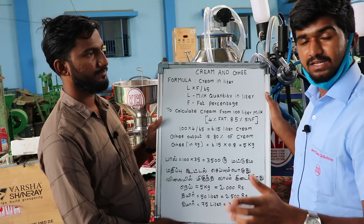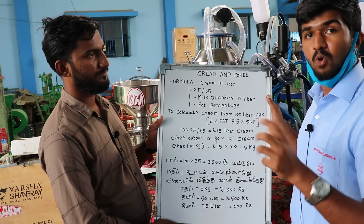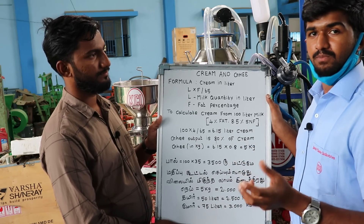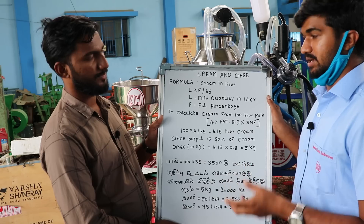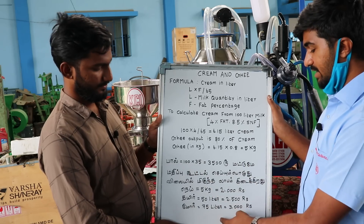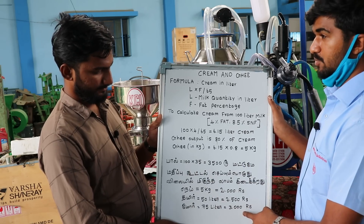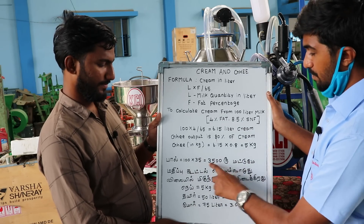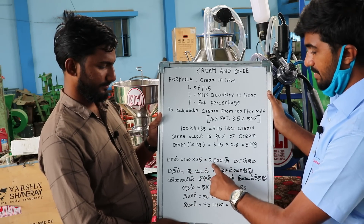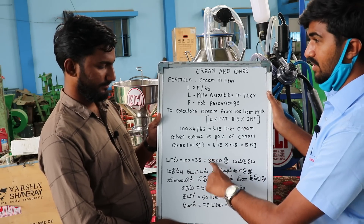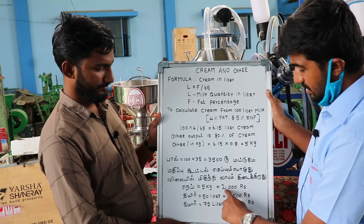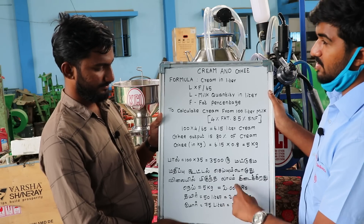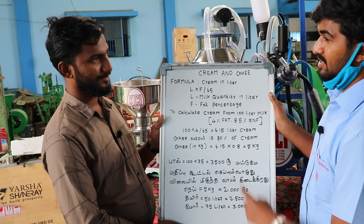We can do more with buttermilk — for buttermilk, we have 3,000 rupees. So the milk sale is 3,500 rupees, but with value addition it is around 7,000 rupees.